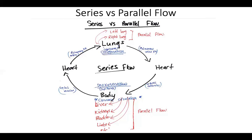Conversely, we have parallel flow, which exists within both the systemic and pulmonary circulations. This is where blood has an option — not all of it goes in one direction. Some goes to the left lung, some to the right lung. In the systemic circulation, some goes to the liver, some to the kidneys, some to the limbs, bladder, or brain. A percentage of that circulation goes to each systemic organ respectively, and that is considered parallel flow.